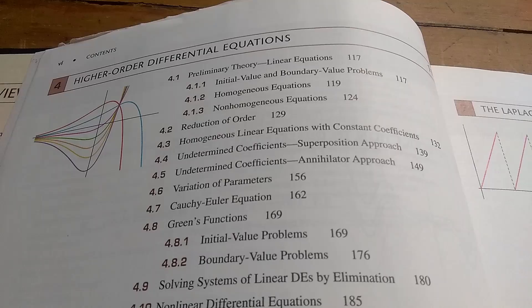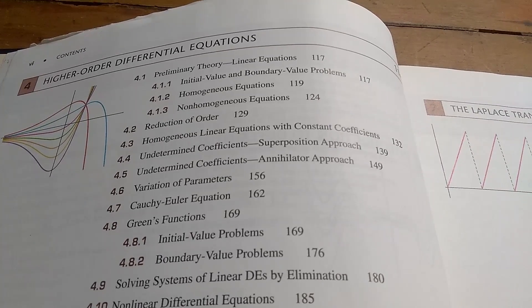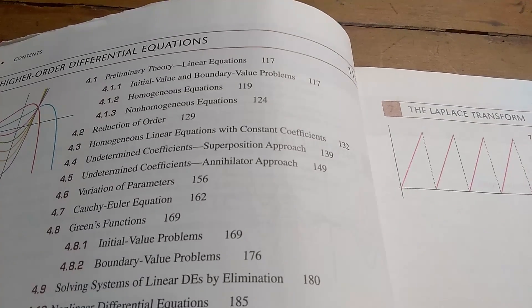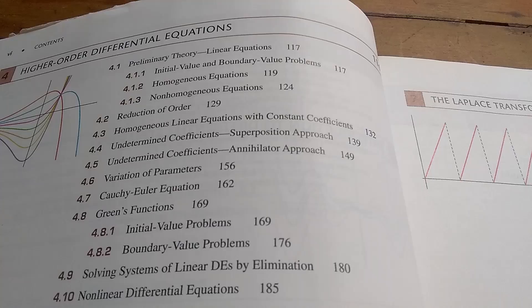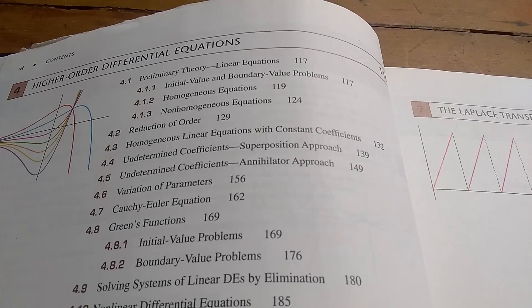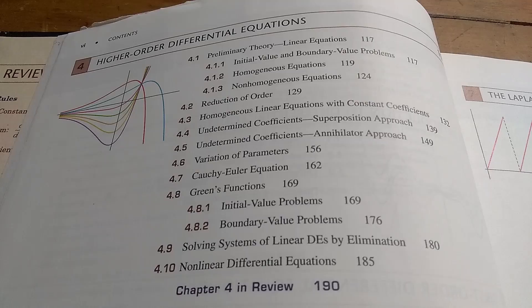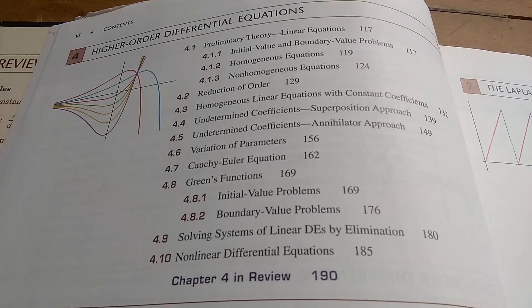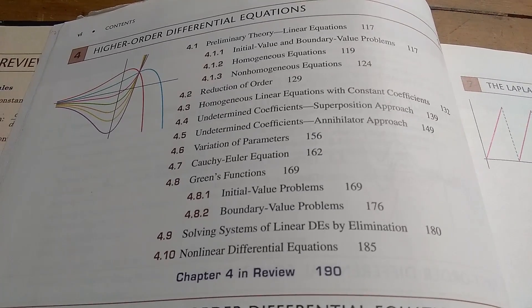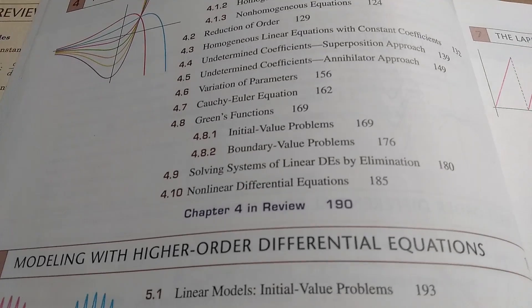4.4 does undetermined coefficients using the superposition approach. 4.5 is the same thing, but it's an annihilator, so you really don't need both. You can just do one of the two. 4.6 is variation of parameters, and 4.7 is Cauchy-Euler equations. For 4.8, we go into greens, etc.